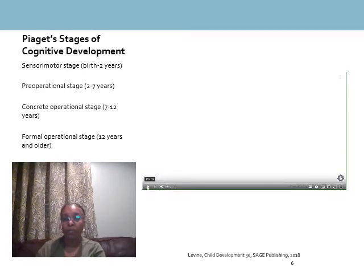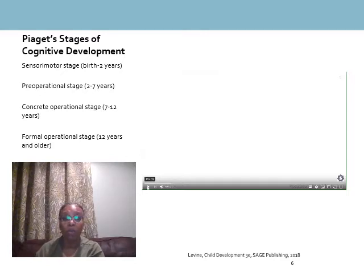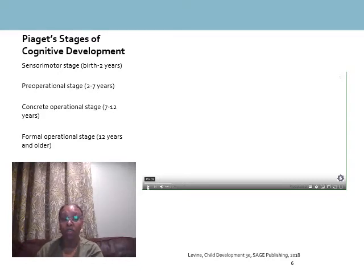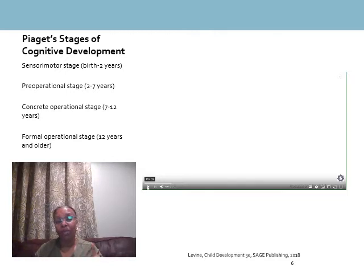As a reminder, the four stages of Piaget's cognitive development are: the sensorimotor stage (birth to two years), the preoperational stage (ages 2 to 7), the concrete operational stage (7 to 12 years), and finally the formal operational stage, which begins in adolescence and continues throughout the rest of your life.